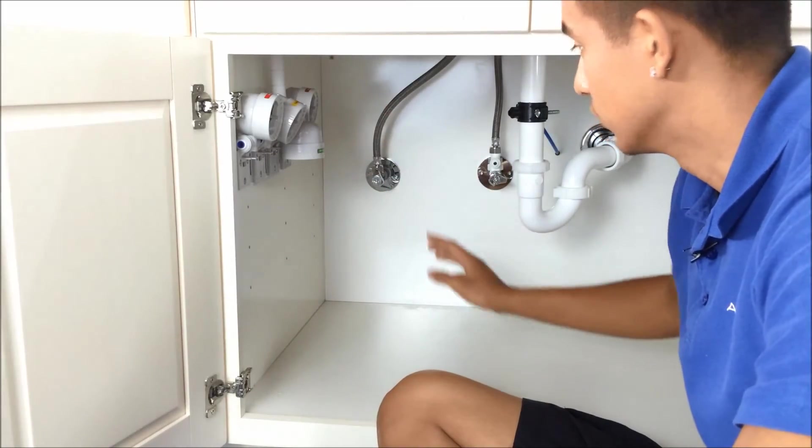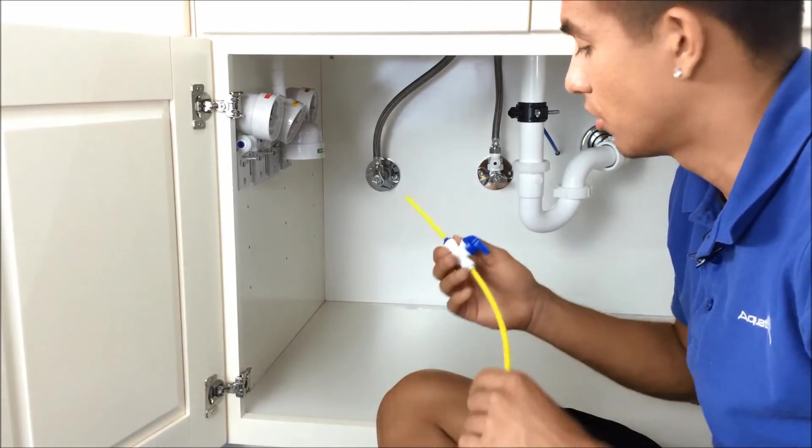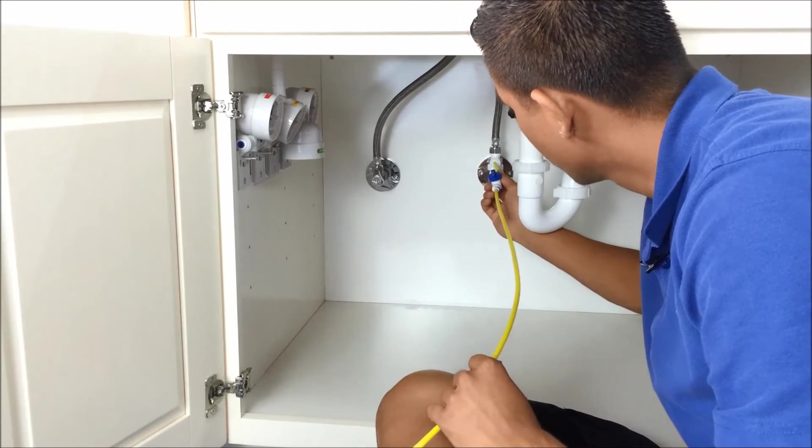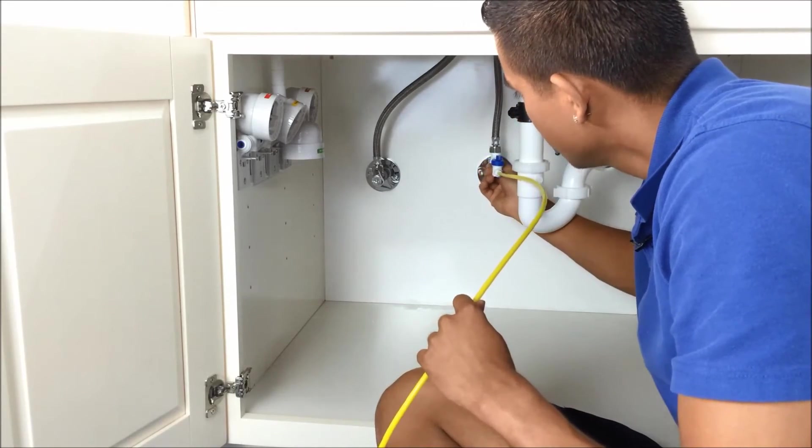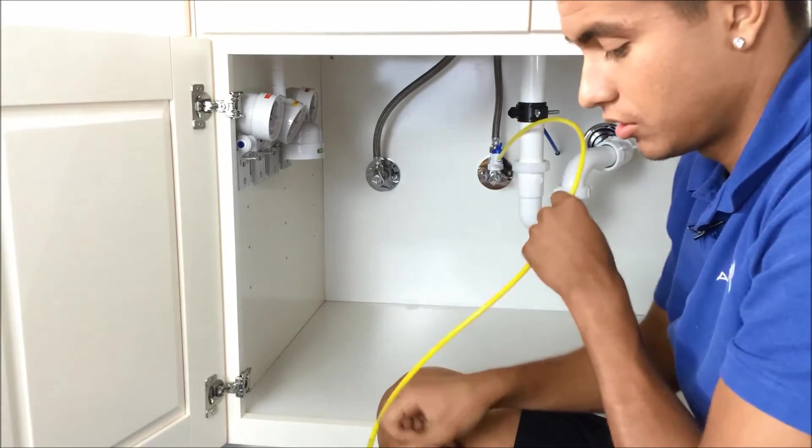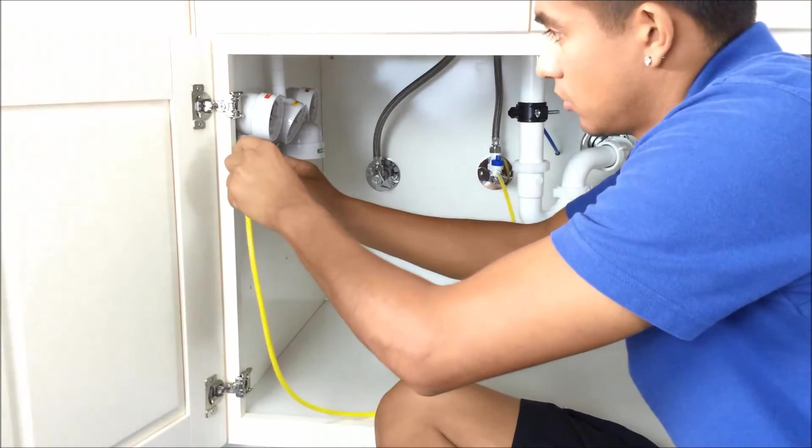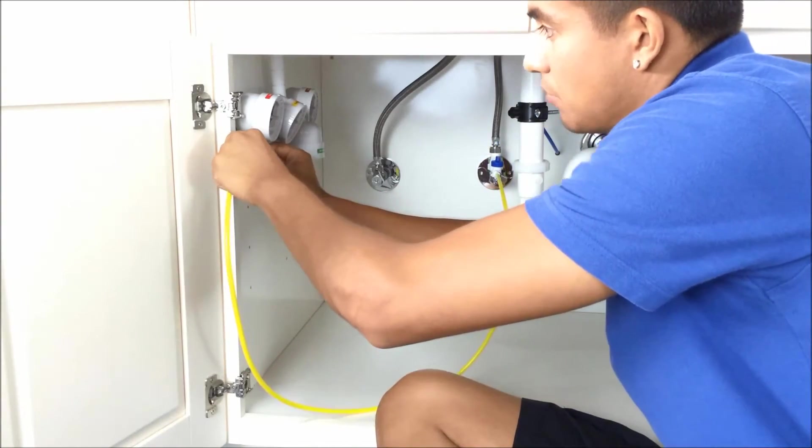For the sake of time, I've already removed all the blue clips. So the first thing we're going to do is hook up our yellow supply line. That goes into the adapter. Then we'll take this end of the tubing and go into the port closest to the sediment cartridge.